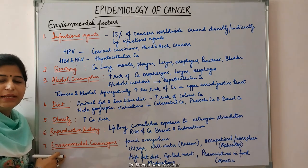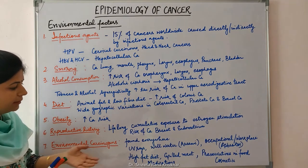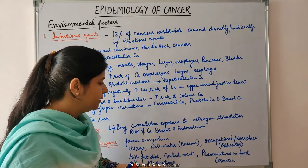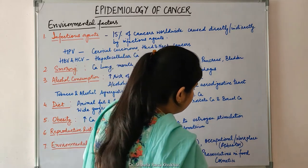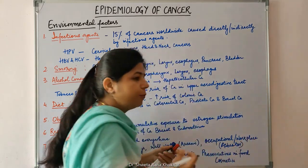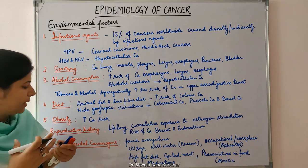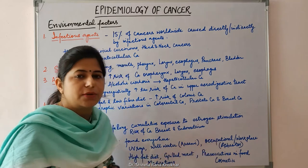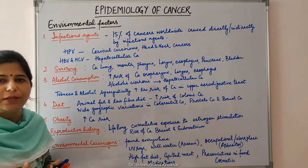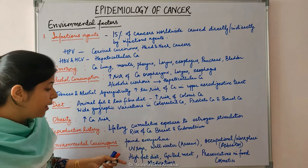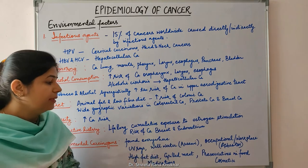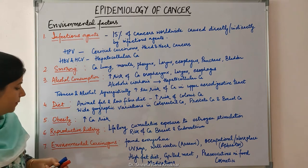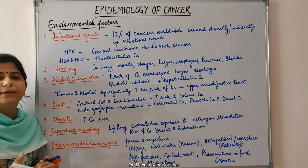Environmental carcinogens are found everywhere: in sunlight in the form of UV rays, in well water where arsenic contaminants are present, and at the workplace where various occupational cancers can occur. For example, asbestos can cause lung carcinoma and mesothelioma. Diet, grilled meat, preservatives in food, cosmetics, and medications can all cause cancer — these are all environmental carcinogens.